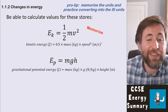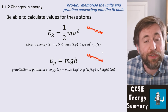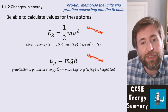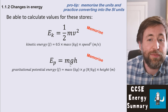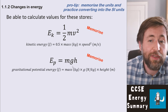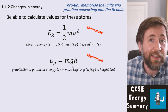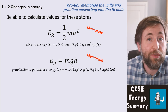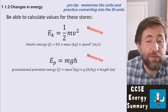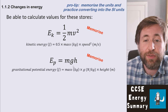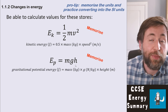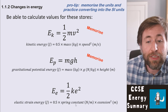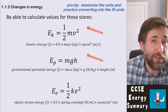Gravitational potential energy is again something you need to memorize. Gravitational potential energy is mass times g — which is gravitational field strength, usually 10 newtons per kilogram, though they'll give you the value to use in any question — times by the height.